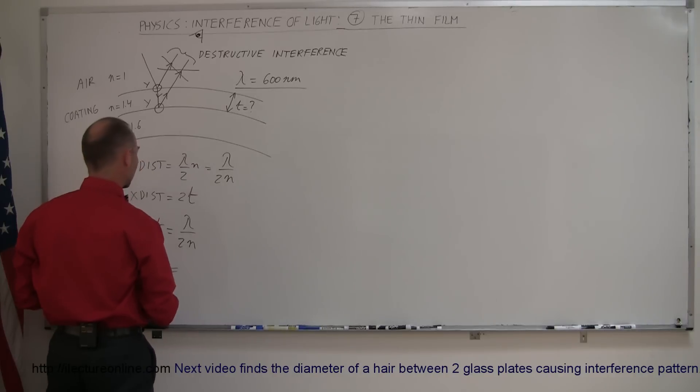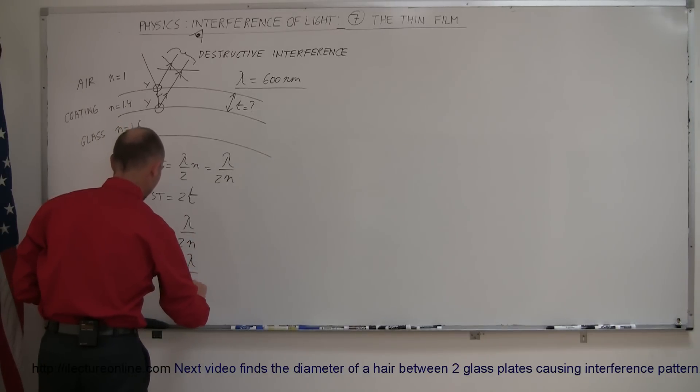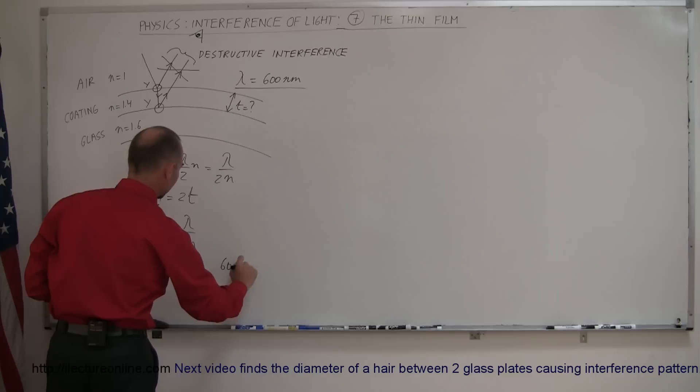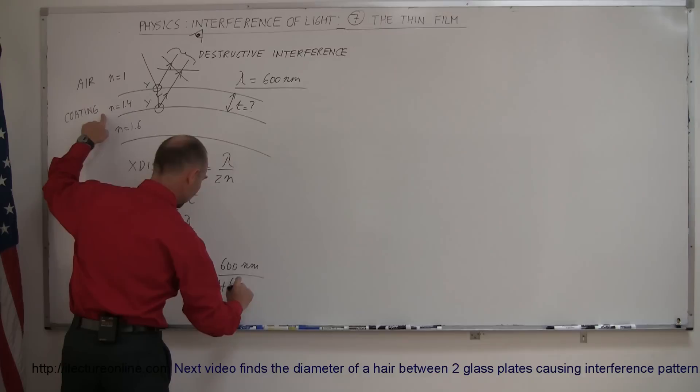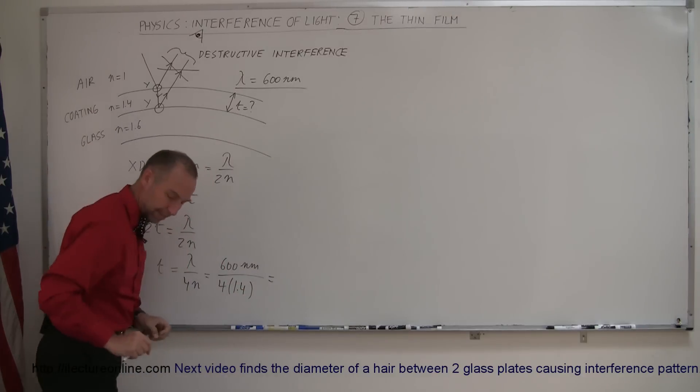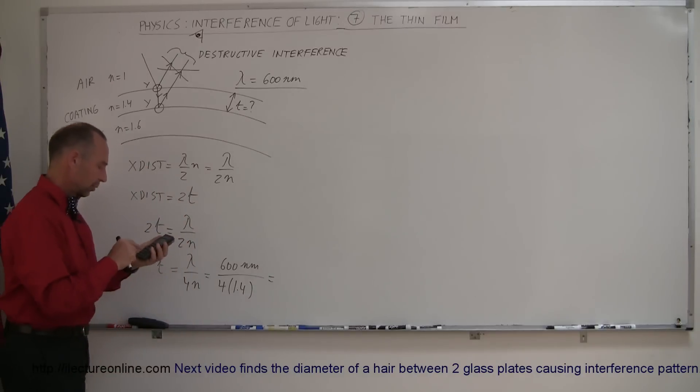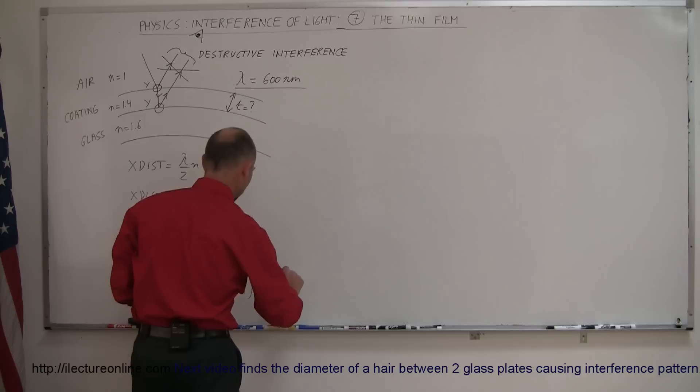Let's plug the numbers in. We have t equals lambda divided by 4n, and so lambda in this case would be 600 nanometers divided by 4 times n. N would be the coating, 1.4 is the index of refraction of the coating. So we have 600 times 10 to the minus 9, divided by 4, divided by 1.4 equals 107 nanometers.